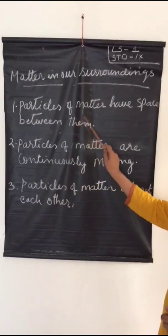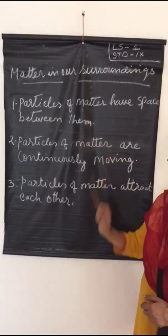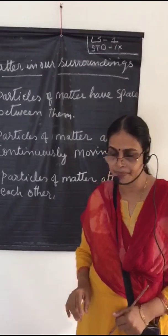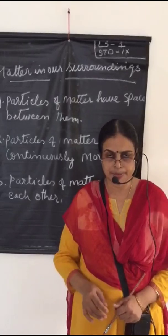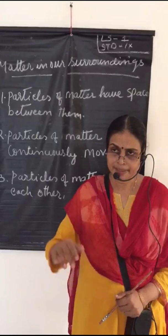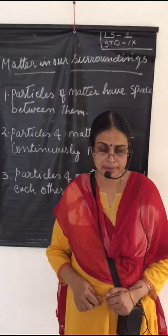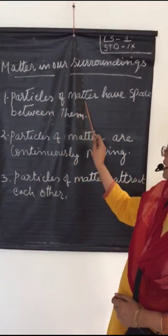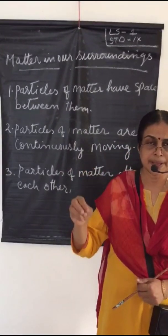Particles of matter have space between them. Take 100 ml of water in a beaker and add one spoonful of salt or sugar. Dissolve it. Can you see the salt? No. And the water level is not increasing either. Where has the salt gone? According to the characteristic features of matter, particles have space between them, and the salt particles occupy that space.